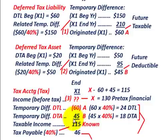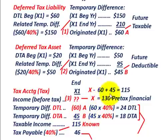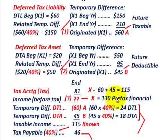We're given taxable income of $115,000. We can now solve for pre-tax financial income algebraically: X − $60,000 + $45,000 = $115,000. Moving the numbers to the other side: X = $115,000 + $60,000 − $45,000 = $130,000. So pre-tax financial income is $130,000.